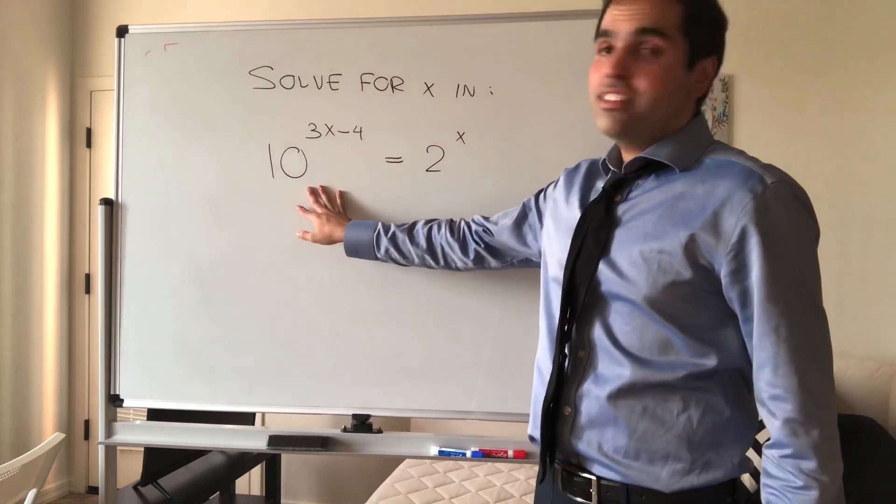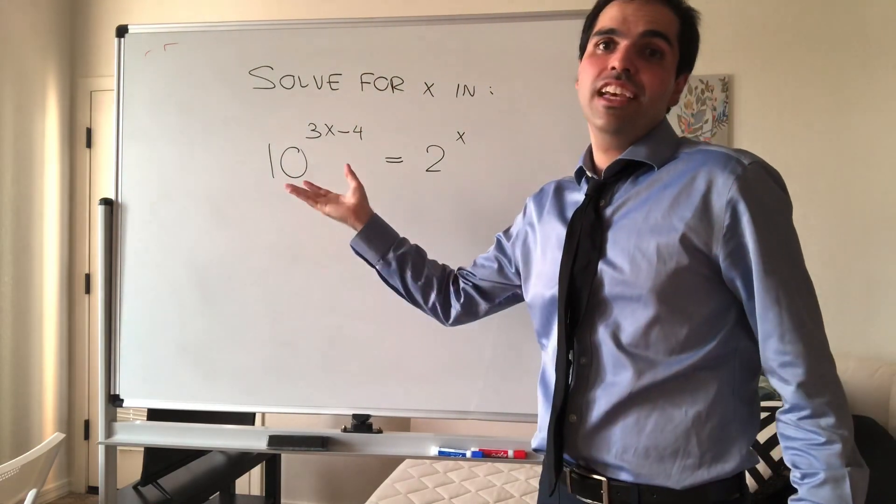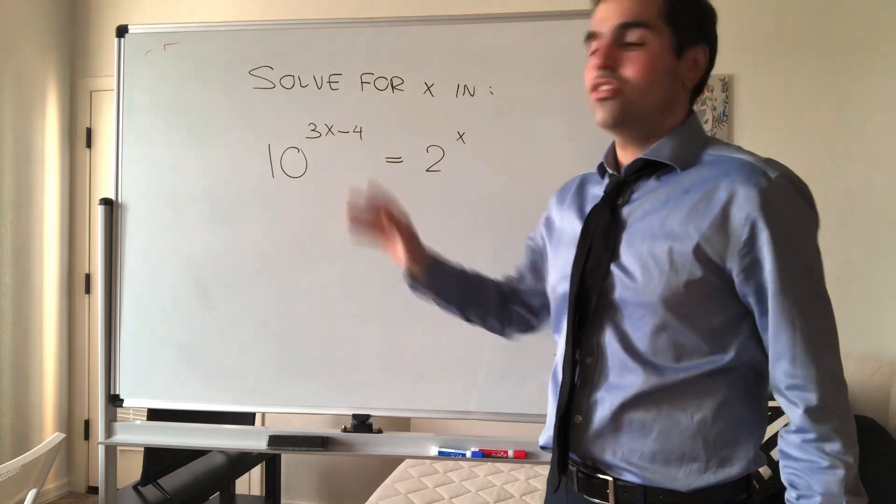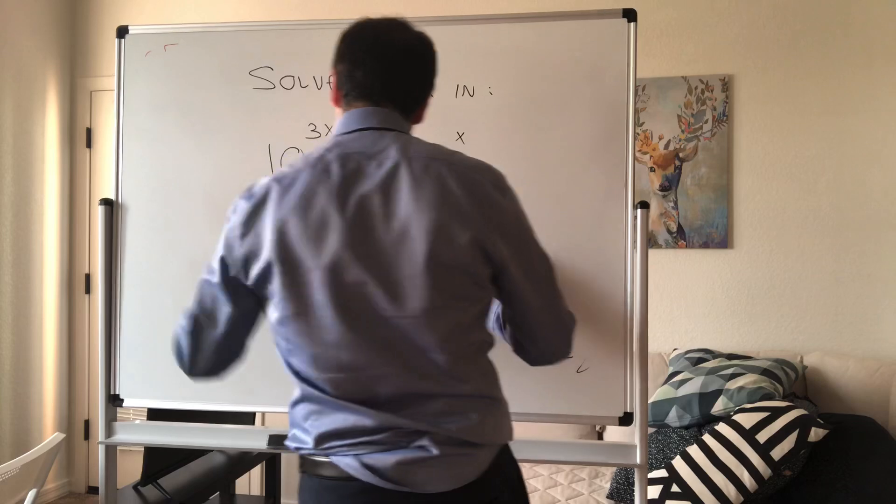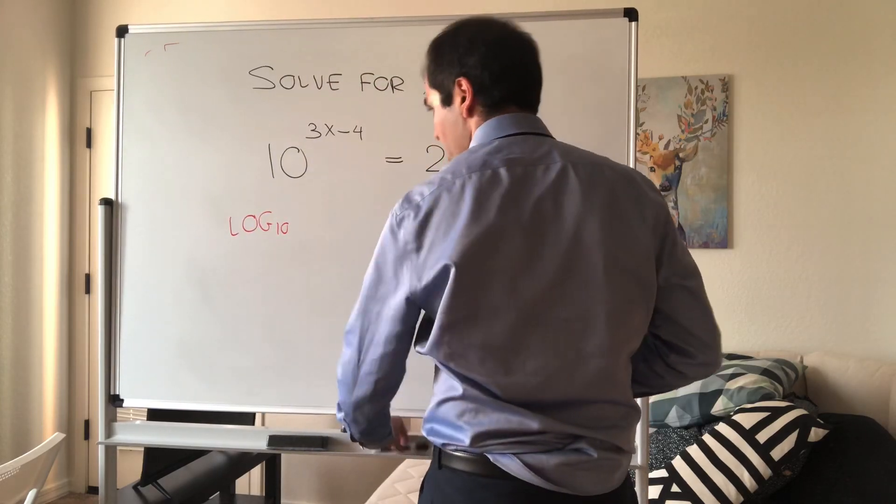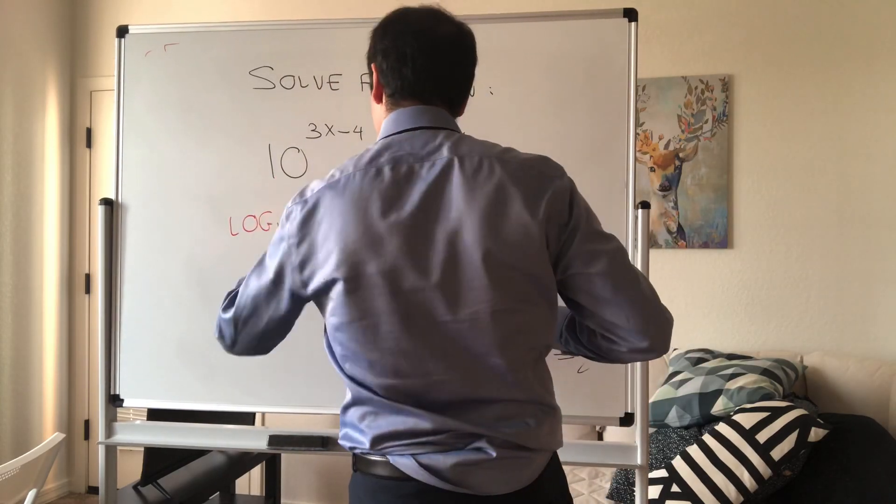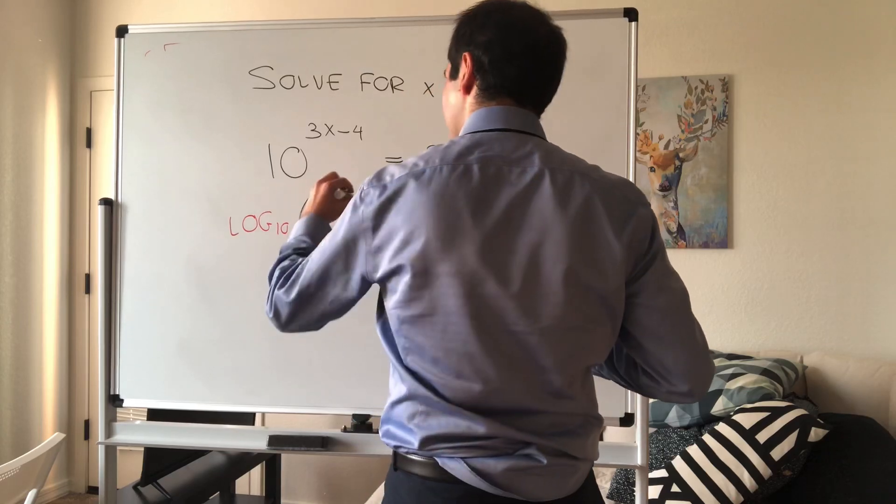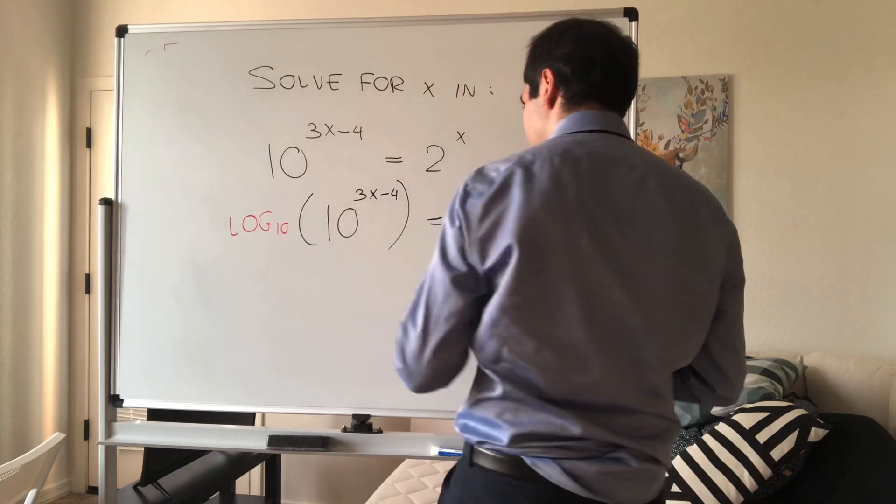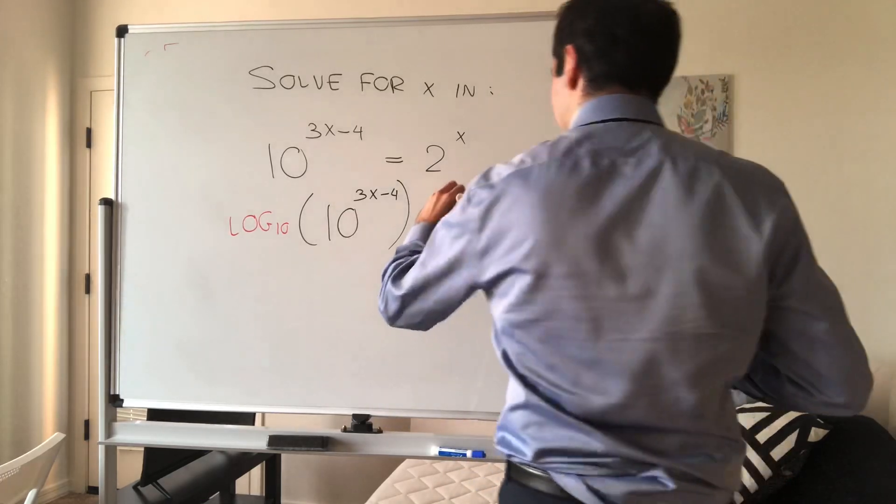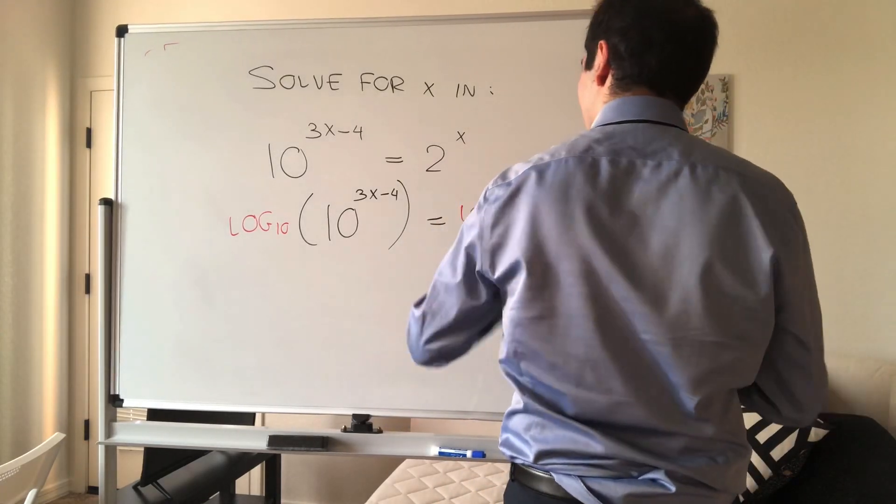That said, there is a nice simplification with log base 10, so let's apply that. So let's apply log base 10 to this equation. I want to emphasize it doesn't really matter. So we have log base 10 of 10 to the 3x minus 4 equals log base 10 of 2 to the x.